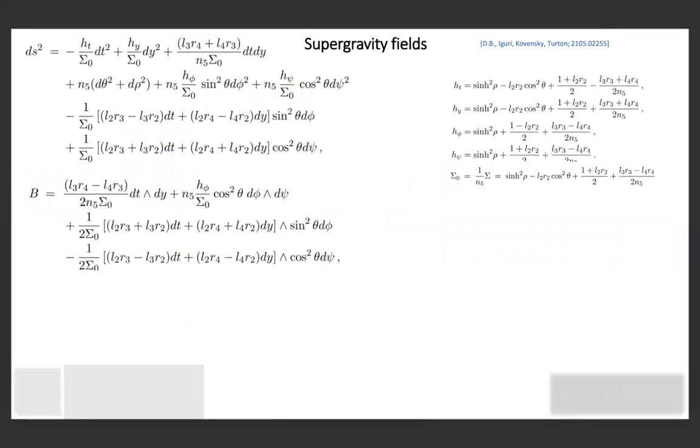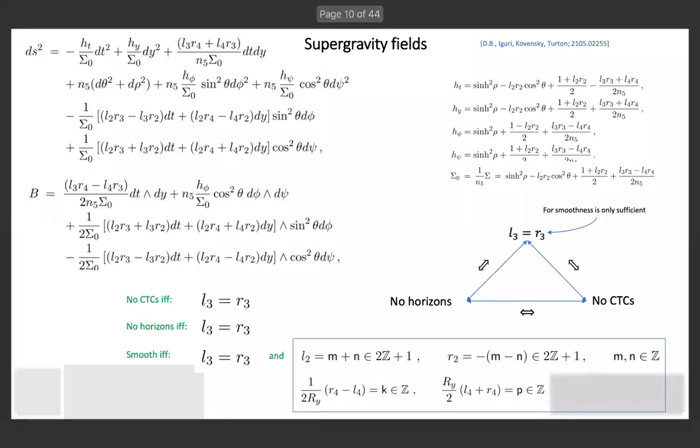This expression here is a bit horrible, but at the end of the day, you can see there are a lot of coefficients l2, l3, l4, so you can actually check if it's consistent or not. If you require the absence of CTCs, you have the condition that l3 should be equal to r3. This happens to be exactly the same thing that you have if you require the absence of horizons. If you want this to be smooth, you have the same condition plus extra quantization conditions on the coefficients.